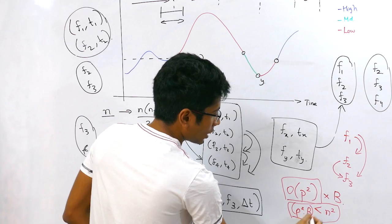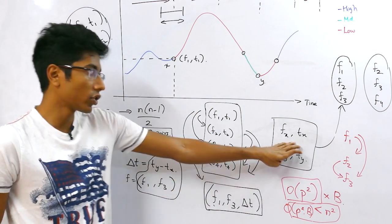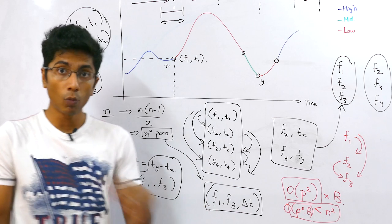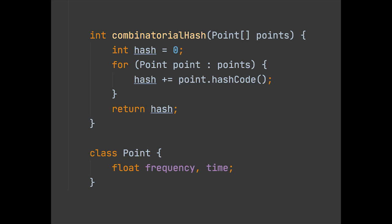So you have a clear advantage using this kind of algorithm because it's not just more accurate, it doesn't do wasteful processing while storing or while searching. Instead, it can take the points in a chunk and convert it into a single hash. This is also called a combinatorial hash.